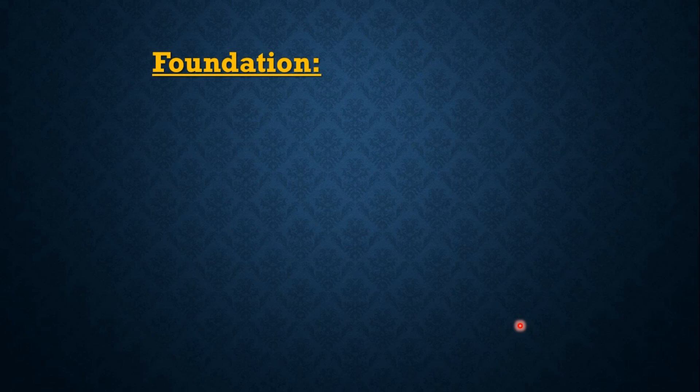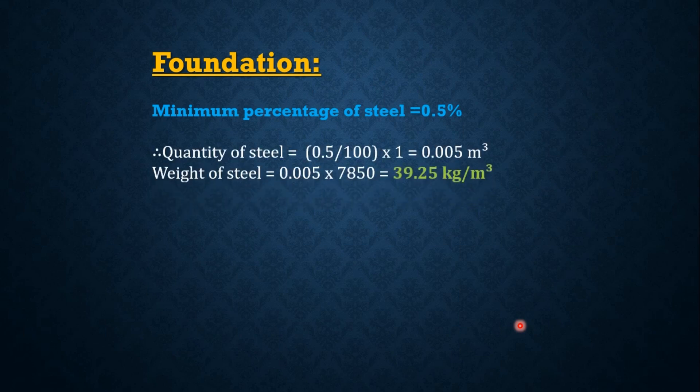Now, how much quantity of steel is required in a foundation? The minimum percentage of steel required in a foundation is 0.5%. Therefore, the quantity of steel equals 0.5 divided by 100 multiplied by 1, which equals 0.005 meter cube. The weight of the steel equals 39.25 kg per meter cube.